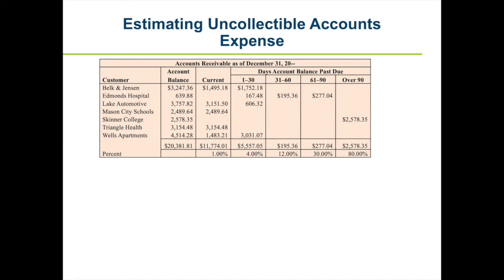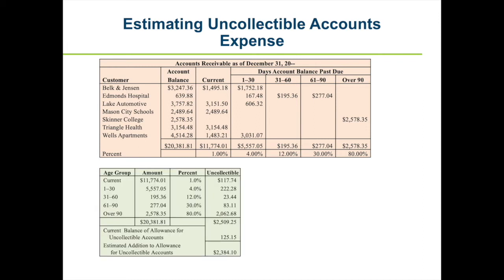The percent for each age group is used to calculate the total estimate of uncollectible accounts. Of the total accounts receivable of $20,381.81 on December 31st, the company estimates that $2,509.25 will become uncollectible. The current amount of $11,774.01 is estimated at 1% uncollectible. As amounts get further from the payment date, the percent goes up — you multiply each group's balance by its percent to get the uncollectible amount.